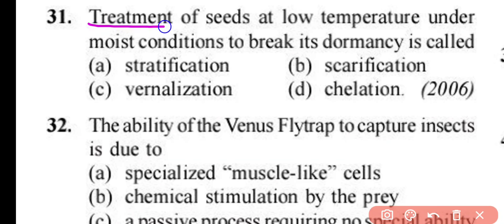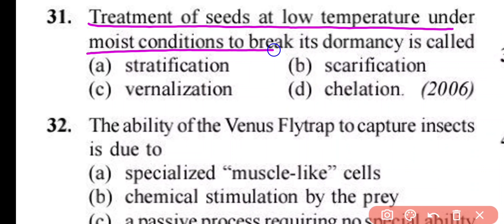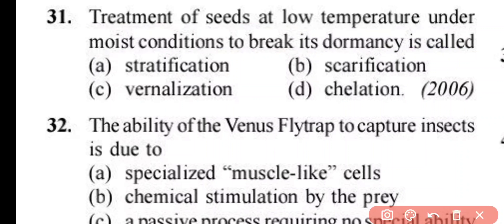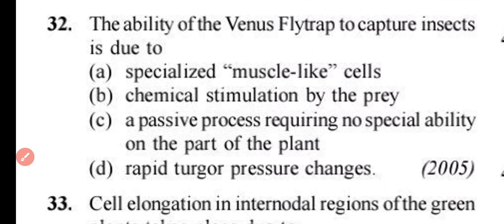Question number 31. Treatment of seeds at low temperature under moist conditions to break its dormancy is called: stratification, scarification, vernalization, or gelation. Correct answer is option C. Treatment of seeds at low temperature to break dormancy is known as vernalization.